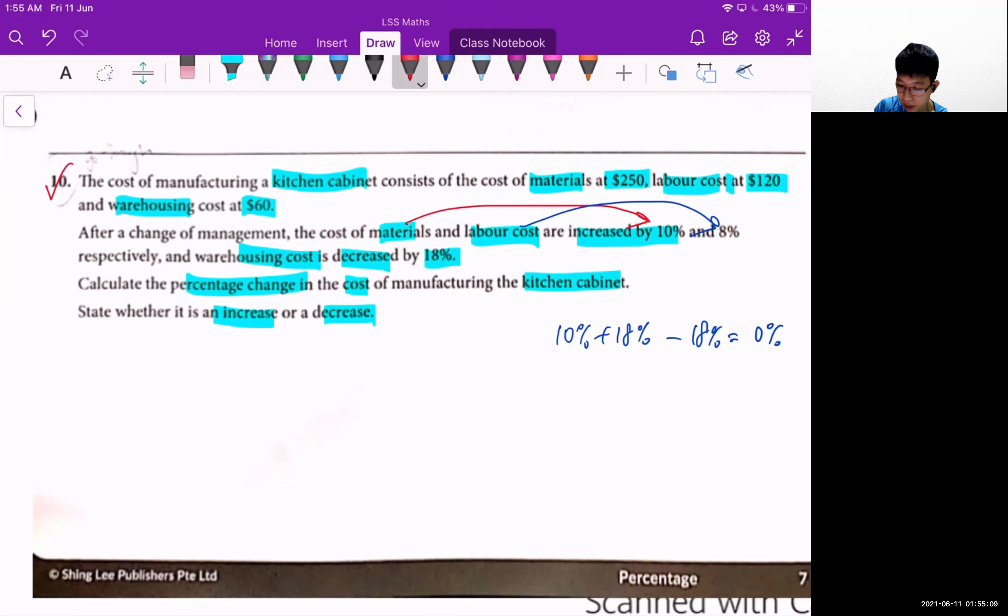Why? Because all of these numbers here have different starting values or the original values are different. So the 10% of $250 is different from 8% of $120. All of them are different. So you need to consider each case individually.